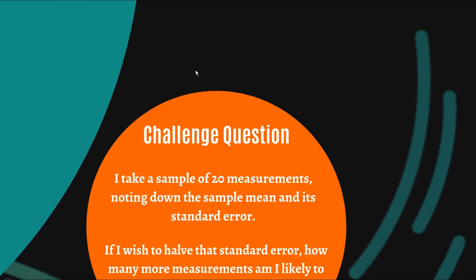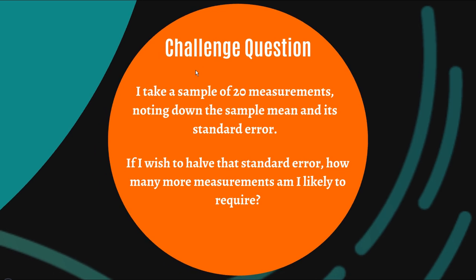But let's now go through to the challenge question. Now, this one's pretty tough. I like to keep them tough, because if I made it easy, someone would answer it straight away and that'd be the end of it. But in this question, I ask: Well, I take a sample of 20 measurements, noting down its sample mean and standard error. Now let's say I wish to halve that standard error. How many more measurements am I likely to require? And I'm keen to see the discussion on this question because it might not be straightforward.